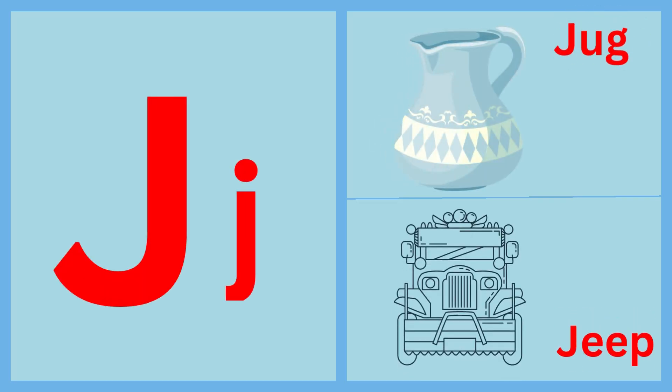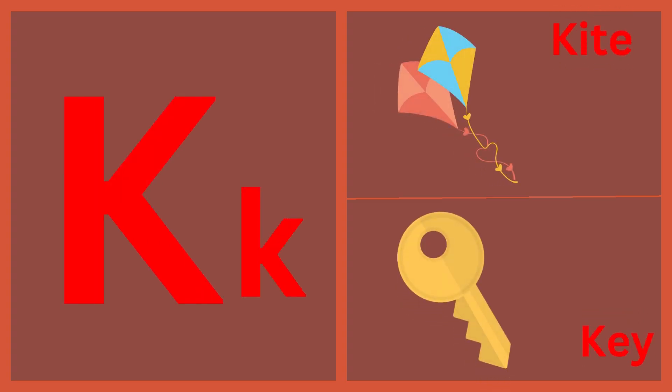J for jug, J for sheep, K for guide, K for key.